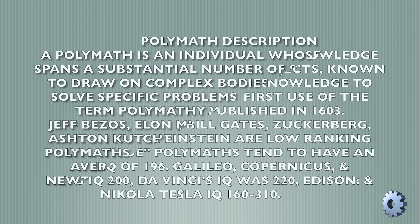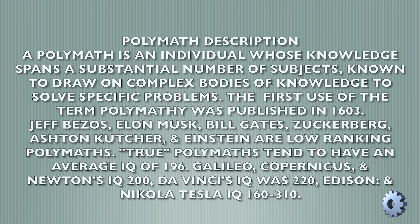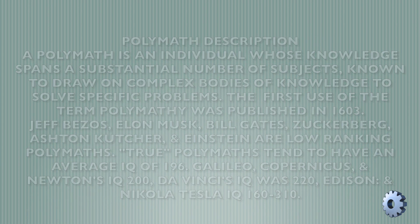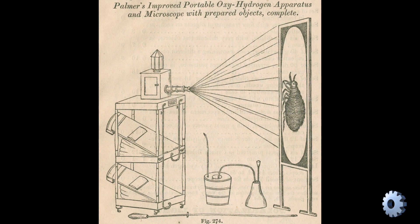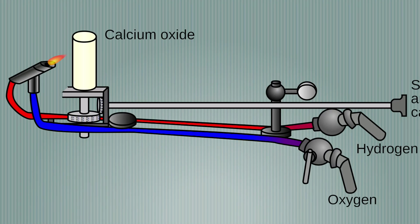Our tale begins with Swiss polymath Leonhard Jöller, who demonstrated an early version of the opaque projector around the year 1756. These early models utilized oxyhydrogen lamps or limelights to create the necessary light for projection. However, due to the explosive nature of oxyhydrogen gas, these were eventually replaced with safer electric lighting.